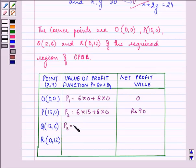At Q, the value of the profit is 6 into 12 plus 8 into 6, and the answer is Rs 120. And lastly at R, we have 6 into 0 plus 8 into 12, which is Rs 96.